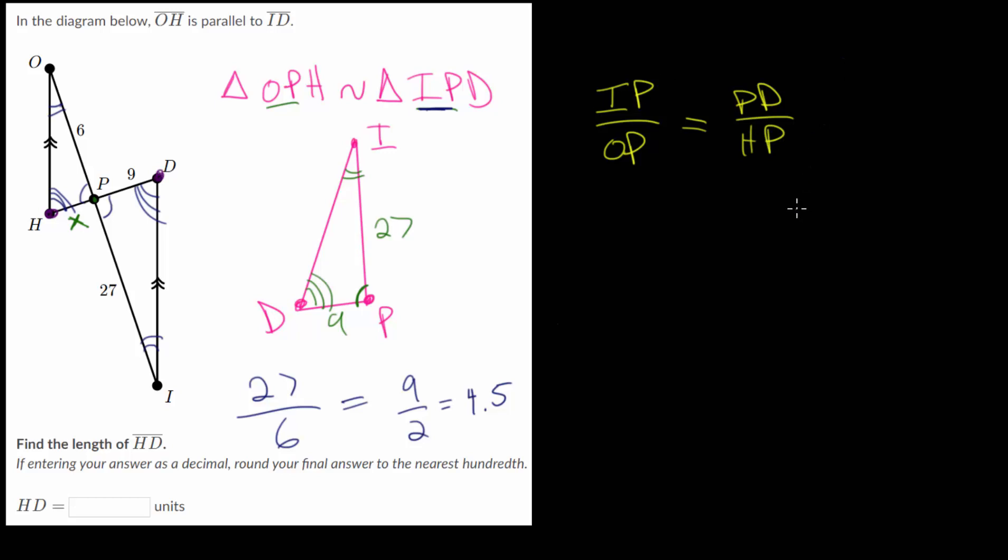And with this, we can just plug in all of our information. We have that IP is 27, OP is 6, PD, that is 9, and HP, we've called that X. And from here, we can just solve for the missing variable. So let's multiply each side of the equation by X to do so. And we know this is really just 9 halves.